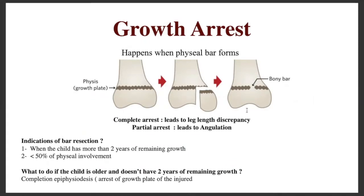A physeal bar is basically a bony formation in the growth plate. There are two types of growth arrest: complete arrest, which leads to discrepancy between the two legs, and partial arrest, which leads to angulation and abnormal bone angles. We need to cut this bony bar so the leg can continue growing. There are specific indications: if the child has more than two years of remaining growth, or if the physeal involvement is less than 50%, we do a bar resection.